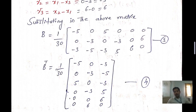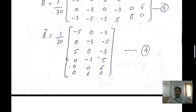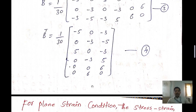B transpose means converting each row of B into a column. The first row becomes the first column, the second row becomes the second column, and the third row becomes the third column. This is equation number 4.